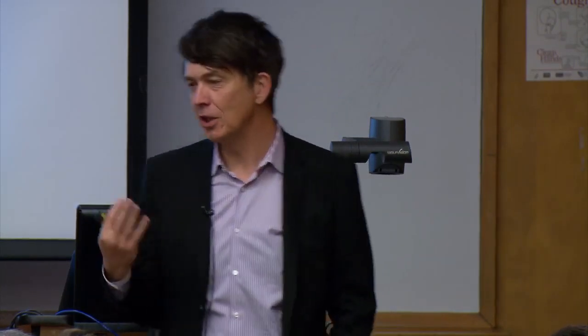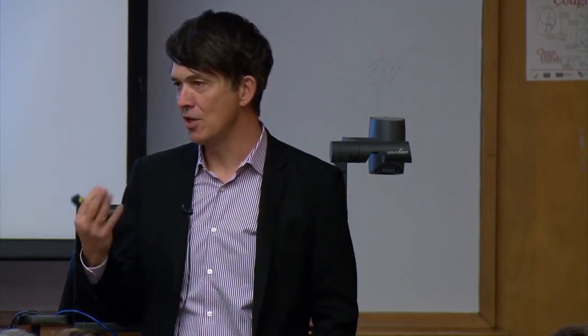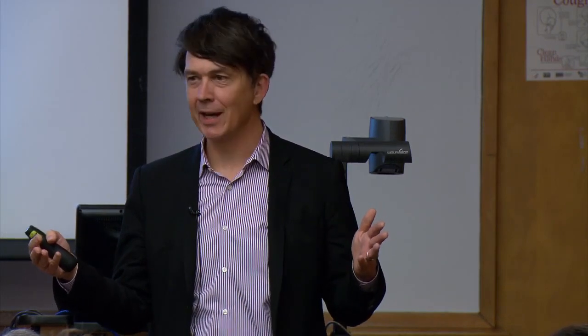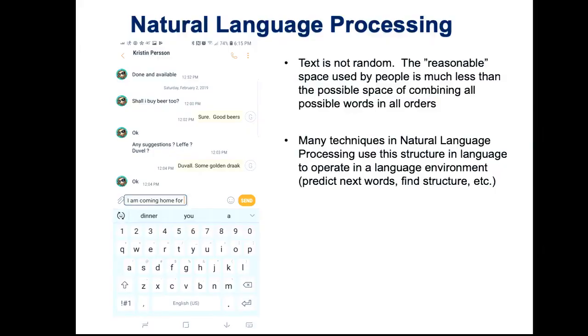Natural language processing exploits the fact that language is not a random connection of words. If a vocabulary had only 10 words and I had a sentence of five words, in principle I'd have 10 to the fifth combinations — because in every word position I can put 10 words. But that's not how language works. The actual dimensionality of natural language is much less than you think, and that's what NLP learns to exploit.